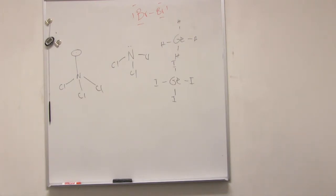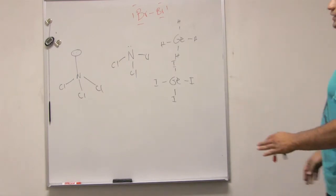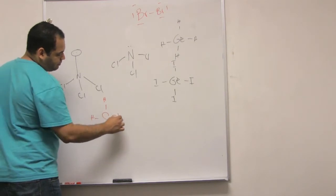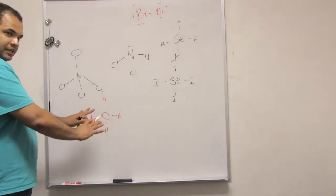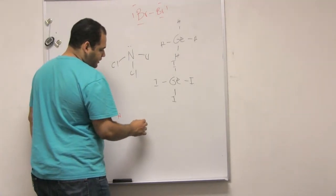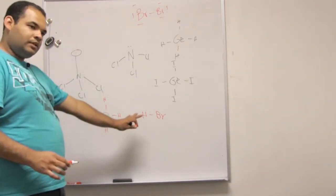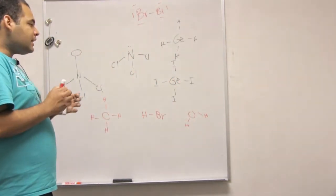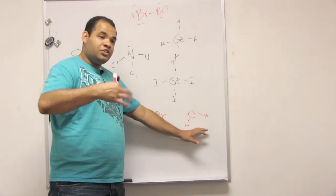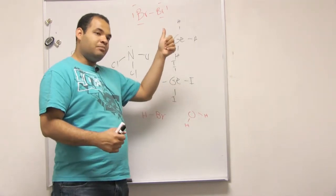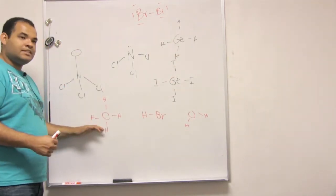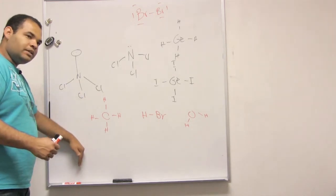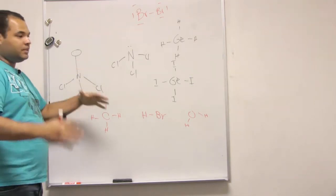The strongest intermolecular force will have the highest boiling point and the lowest vapor pressure. If I have methane, that's dispersion. If I have this molecule, it is a dipole. And if I have this one, hydrogen bond. Because hydrogen bonds are stronger — they require more energy to break — therefore the boiling point would be bigger. The weaker interaction of dispersion means the boiling point is lower.